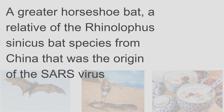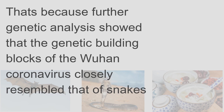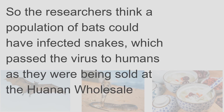A greater horseshoe bat, a relative of the Rhinolophus cynicus bat species from China, was the origin of the SARS virus. According to a group of scientists who edit the Journal of Medical Virology, the intermediary species in this case could be the Chinese cobra. Further genetic analysis showed that the genetic building blocks of the Wuhan coronavirus closely resembled that of snakes, leading researchers to think a population of bats could have infected snakes, which passed the virus to humans as they were being sold at the Huanan wholesale seafood market in Wuhan.